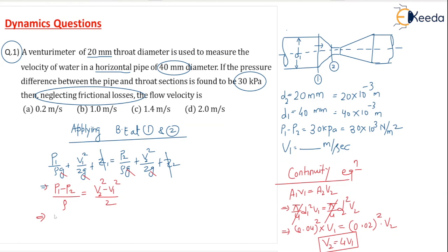Now P1 - P2. What is the value of P1 - P2? 30 kilopascals. I will write 30 × 10³. Density - water is given here, you can see water. Water density is how much? 1000. 1000 equals V2 - V2 is 4V1. (4V1)² - V1² divided by 2. So this 1000 gets cancelled with 10³. 30 × 2 is 60. 60 = (4V1)², that is 16V1² - V1², that is 15V1².